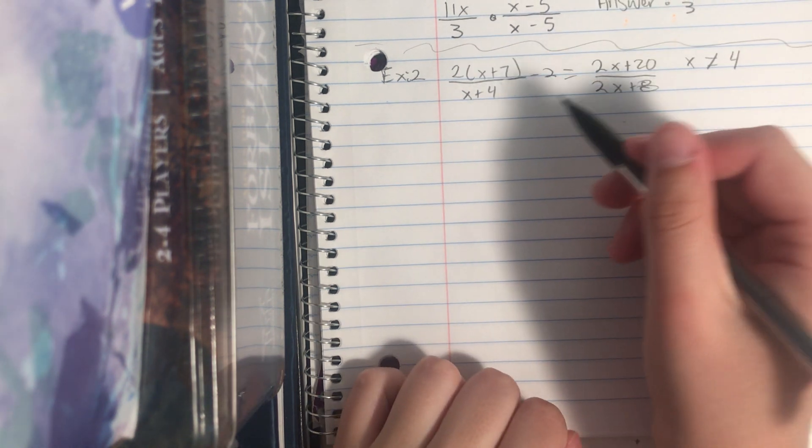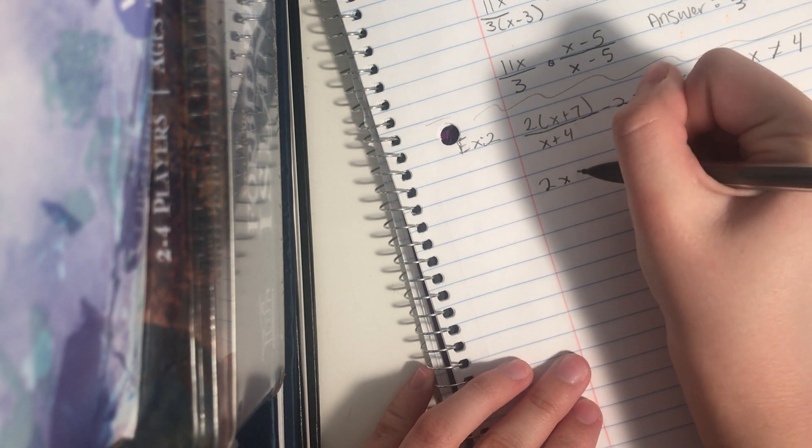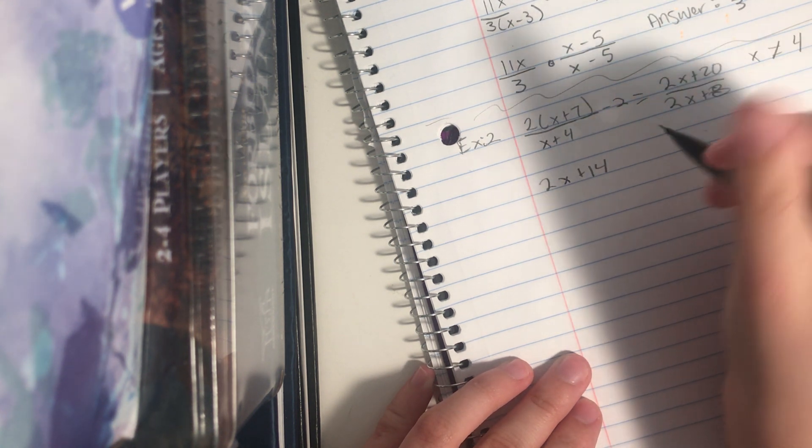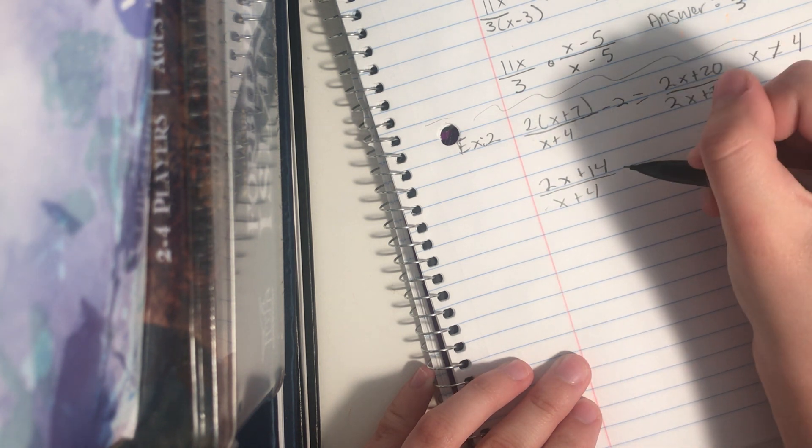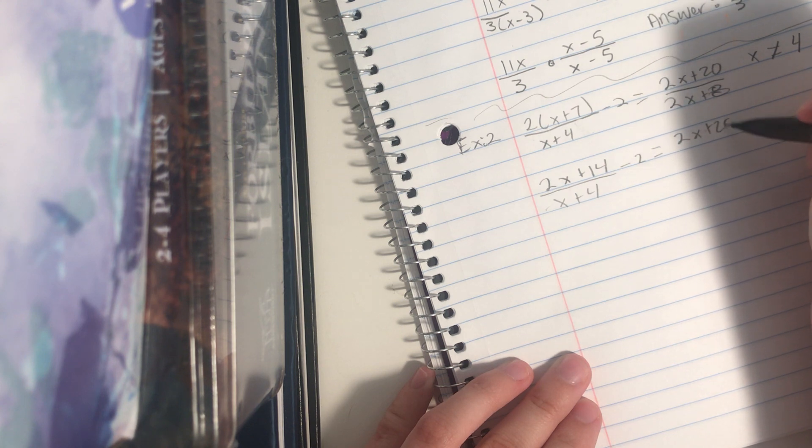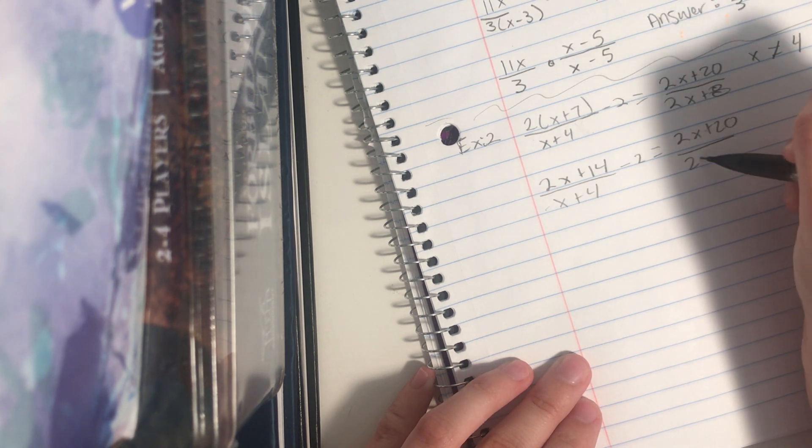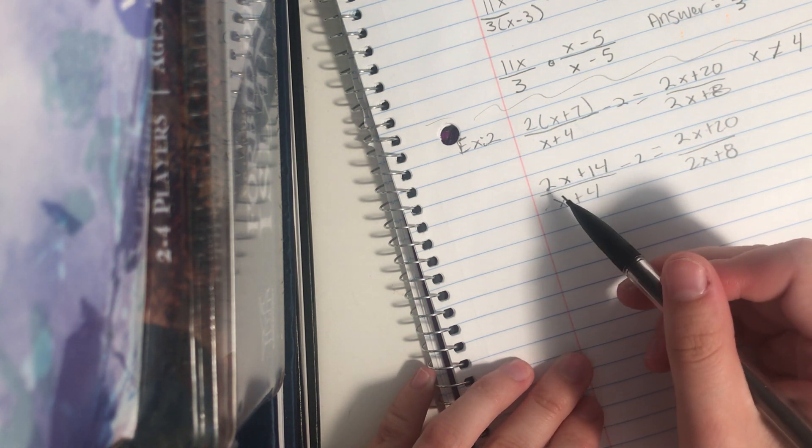Then I want to distribute the 2. So when distributing 2, I have 2x plus 14 over x plus 4 minus 2 equals 2x plus 20 over 2x plus 8. I distribute the 2 over here for this top part.